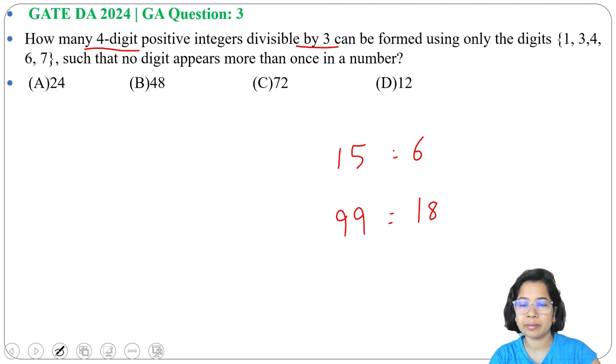We have 5 numbers, from which we need to choose 4 numbers in such a way that is divisible by 3. There are 4 places; in those 4 places we need to keep those 5 numbers, and no digit appears more than once. Suppose 1 digit is in the first place, it should not be in the second place.